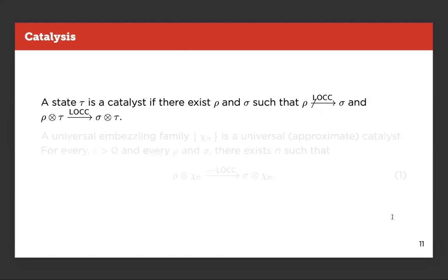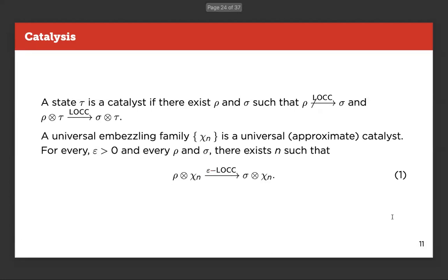In the beginning, I said that there is a strong relation between embezzlement and catalysis. Usually, when we talk about catalysis, we talk about a state τ such that there are ρ and σ such that even if it's not possible to convert ρ into σ with LOCC, it is possible to convert ρ ⊗ τ into σ ⊗ τ with LOCC. So τ makes some conversions that otherwise were impossible possible. In this sense, χ_n is some kind of universal catalyst with respect to approximate conversion, but I put approximate in parentheses because we can make the approximation arbitrarily small.